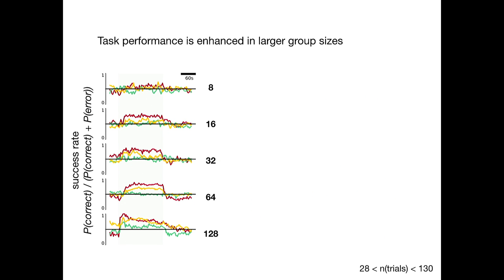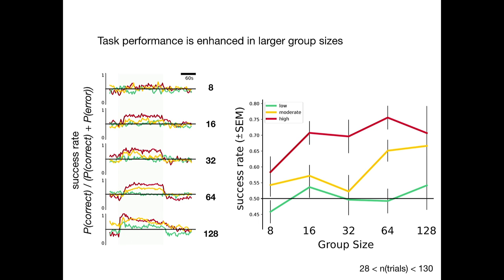Well, if we vary the group size, we see that the performance drastically increases with larger groups. So here I've varied the group size from 8 all the way up to 128. And you'll see that as the group size increases, the amplitude of the response increases, particularly for the high and moderate coherence levels. That's maybe easier to see if I show you just this is the mean success rate during the last half of the stimulus, the last 90 seconds.